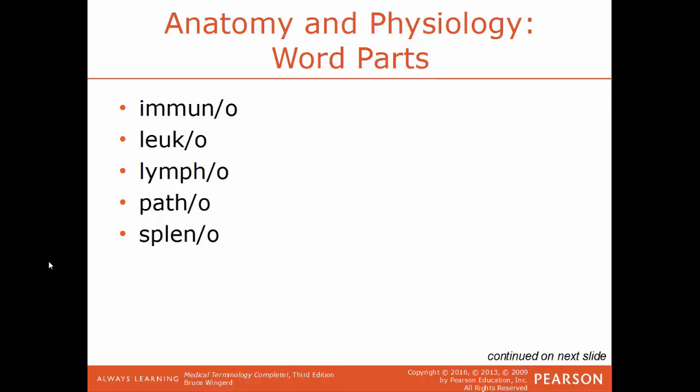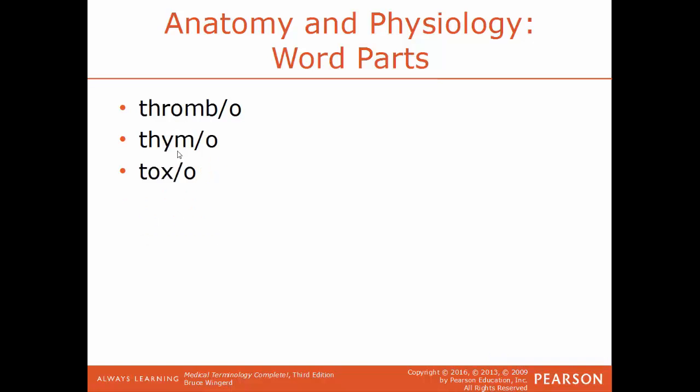Immuno references the immune system. Leuco means white — a white blood cell would be a leukocyte, spelled with either a C or a K. Lympho refers to the lymphatic system or lymph in general. Patho refers to disease. Spleno references the spleen. Thrombo refers to a clot or blood clot. Thym or thymo references the thymus gland. Tox or toxo refers to poison — something toxic is poisonous.